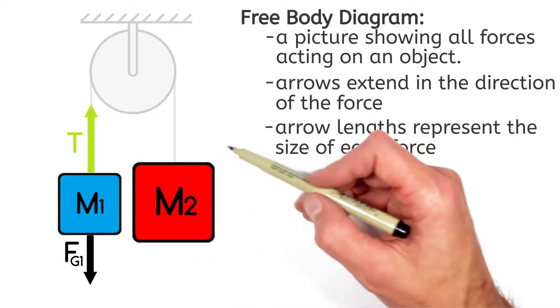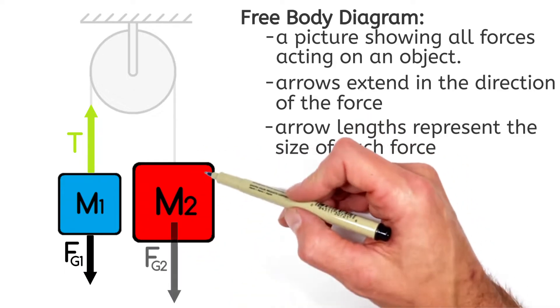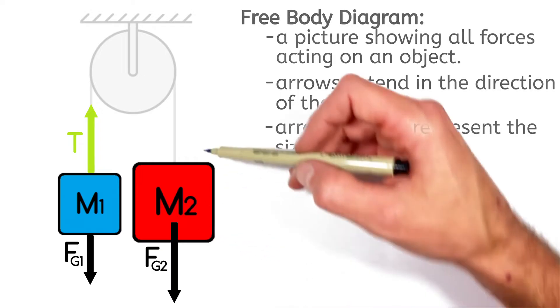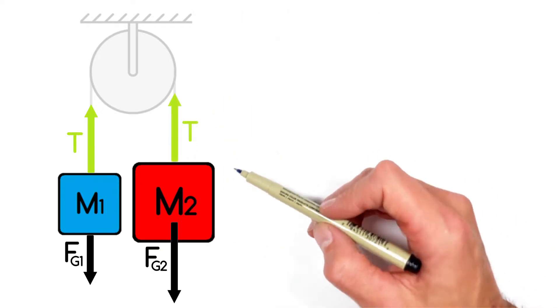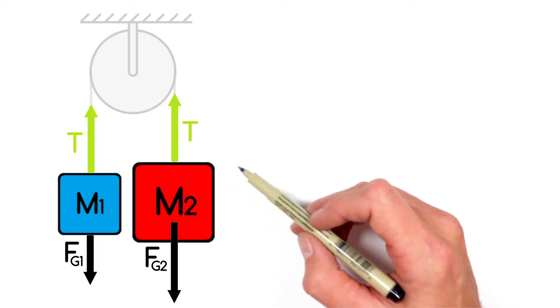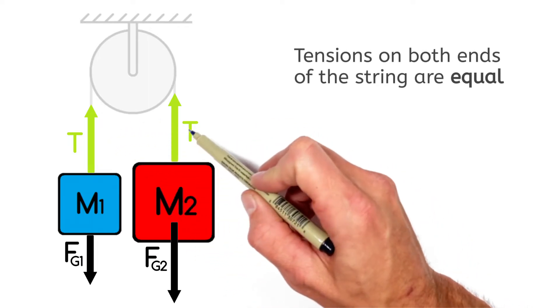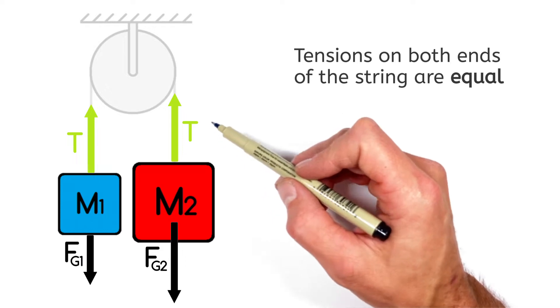Now we see a similar situation over here with the second block. There's going to be the force by gravity acting downward and the tension in the string acting upward. And it's really important in this problem to recognize that the tensions on both ends of the string are the same.